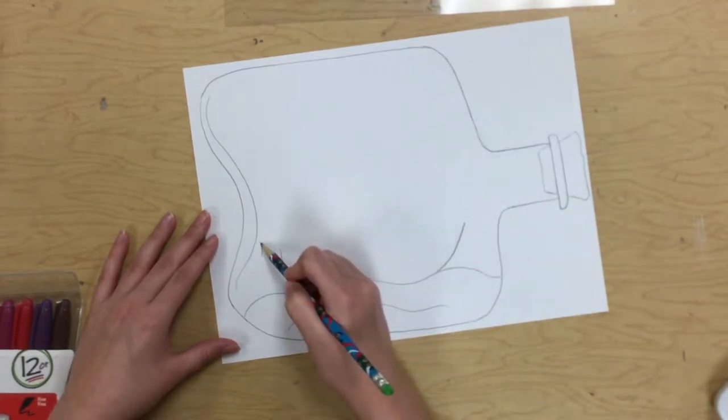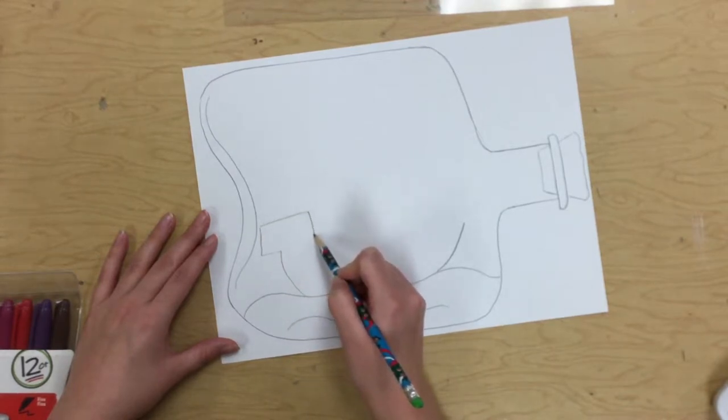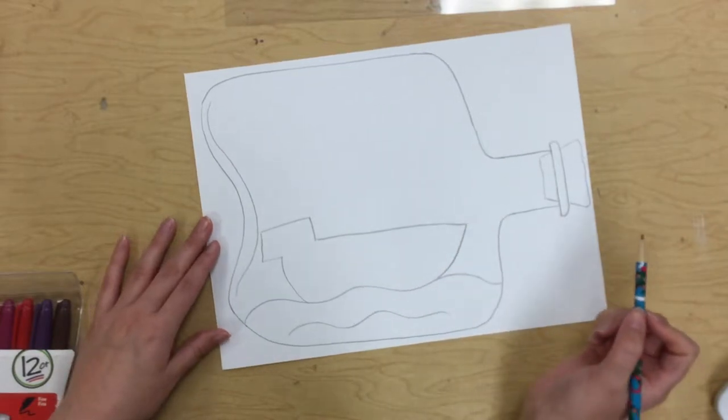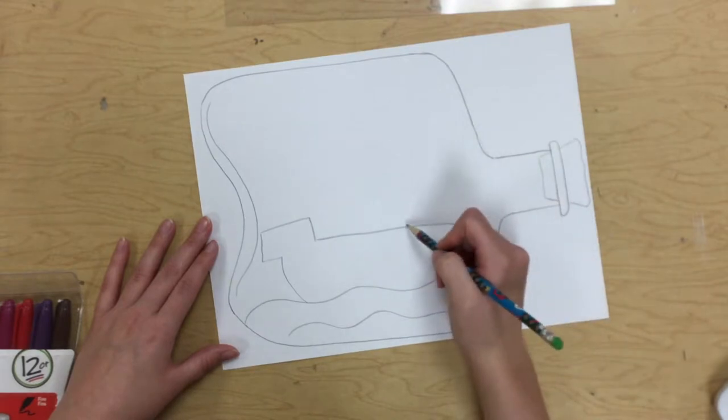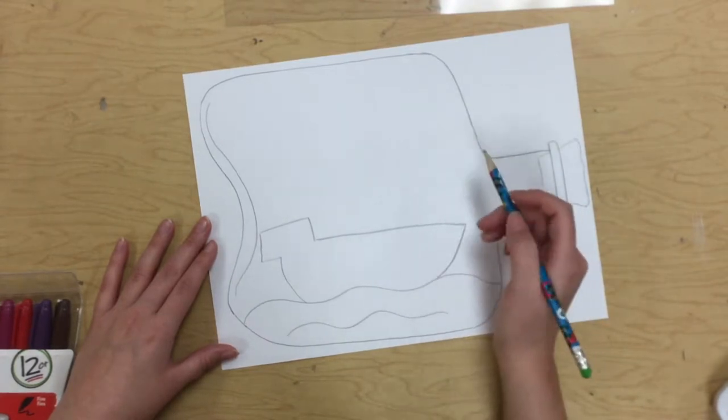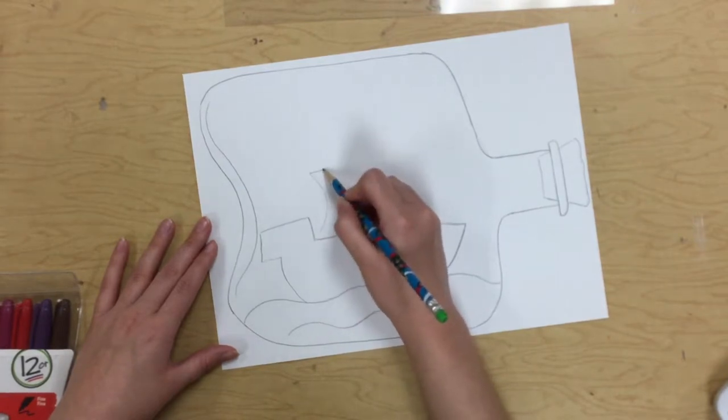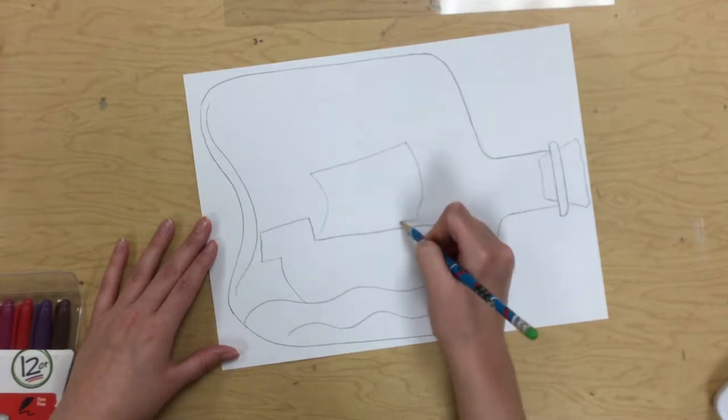And this is of course where you can get really creative on what kinds of things you're going to add to your ship. I think I might make mine a pirate ship, so maybe I'll add some flags. And on one of my flags I'll make a skull and crossbones or something. So maybe this will be my big skull and crossbones flag.